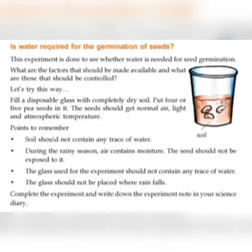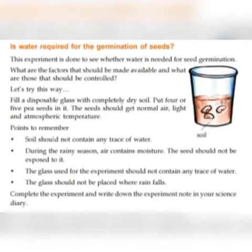Points to remember: 1. Soil should not contain any trace of water — we have to ensure it is dry. 2. During the rainy season, air contains moisture, and the seed should not be exposed to it.